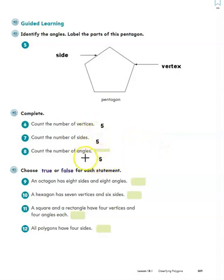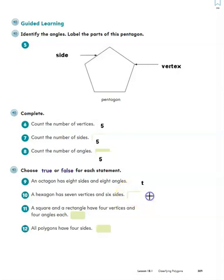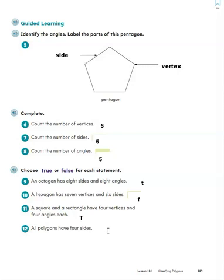The number of vertices will always be the same as the number of angles and the same as the number of sides. Now for true or false: an octagon has eight sides and eight angles — that would be true. A hexagon has seven vertices and six sides — no, hexa means six, so if it has six sides it also has six vertices, so that one is false. A square and rectangle have four vertices and four angles each — true, since they both have four sides. All polygons have four sides — false, because pentagons have five sides, hexagons have six, octagons have eight, and triangles have three.